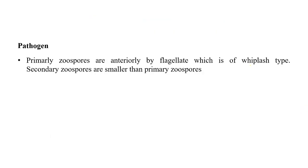The pathogen primarily produces primary zoospores, which are anteriorly biflagellate with a whiplash type flagellum. Secondary zoospores are smaller than primary zoospores. The pathogen also produces plasmodia, which are multi-nucleate masses of protoplasm. In later stages, the plasmodia are compartmentalized and divided into small units, and each unit develops into a zoospore. The production of plasmodia can be observed in the life cycle of club root of cabbage, caused by Plasmodiophora brassicae.